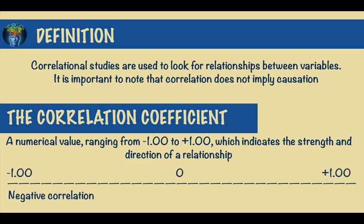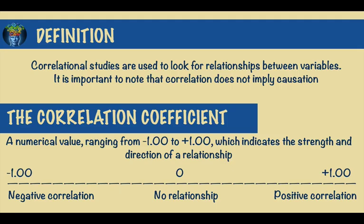A negative correlation indicates that the two variables move in different directions, so as the amount of one variable increases, the other one decreases and vice versa. A positive correlation indicates that the two variables move in the same direction, so both variables increase or decrease at the same time. A zero correlation indicates that there is no relationship between the two variables.